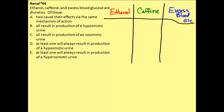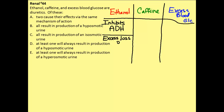Let's discuss ethanol first. Ethanol is going to be a diuretic because it inhibits ADH release. ADH is antidiuretic hormone, which typically acts to save water in the body. So if you don't have this hormone or it's deficient, then you will have excess loss of water.